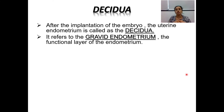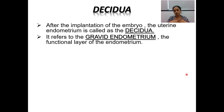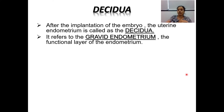The gravid endometrium is under the influence of progesterone, which is very necessary for maintaining pregnancy because the endometrium must remain in the secretory phase for implantation to occur and for the glands and blood vessels to nourish the developing embryo. Progesterone plays a very important role in maintaining the pregnancy. This endometrium is called the gravid endometrium; mainly the functional layer of the endometrium is involved.